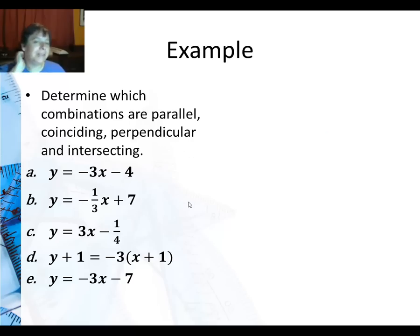So in this example, we're going to determine which combinations are parallel, coinciding, perpendicular, and just plain old intersecting but not perpendicular. Most of these look like they're pretty easy to see. I see I've got my slope as negative three there, negative one-third there, three there, negative three there, and negative three there. The only thing that's throwing me off is this equation for d.